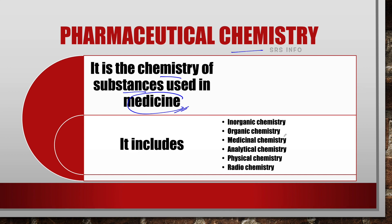Pharmaceutical Chemistry includes Inorganic Chemistry, Organic Chemistry, Medicinal Chemistry, Analytical Chemistry, Physical Chemistry and Radio Chemistry. All these branches of chemistry are included in Pharmaceutical Chemistry.